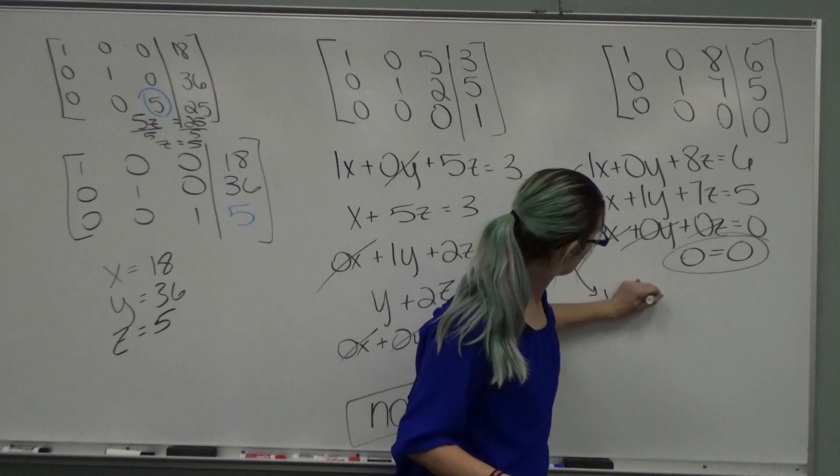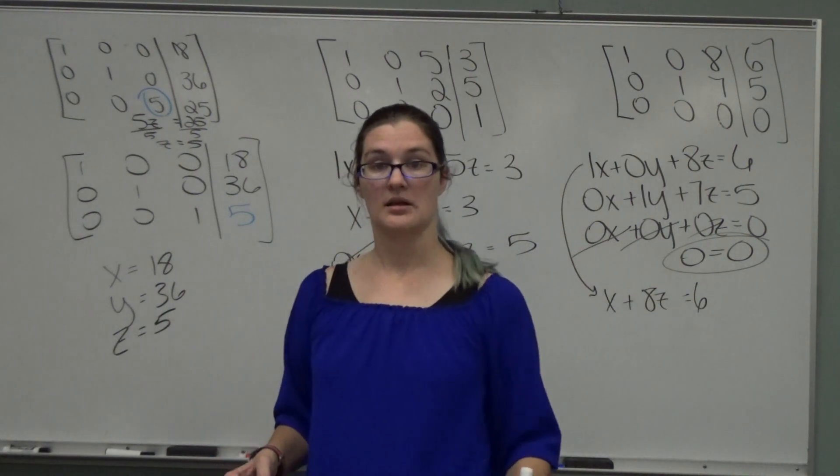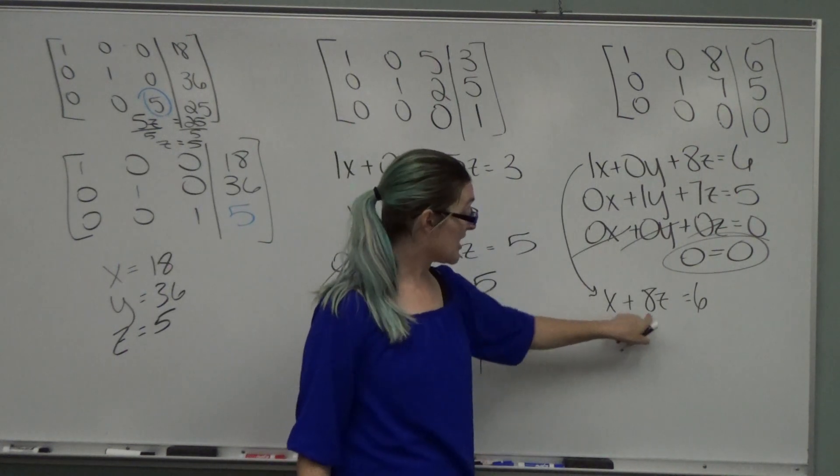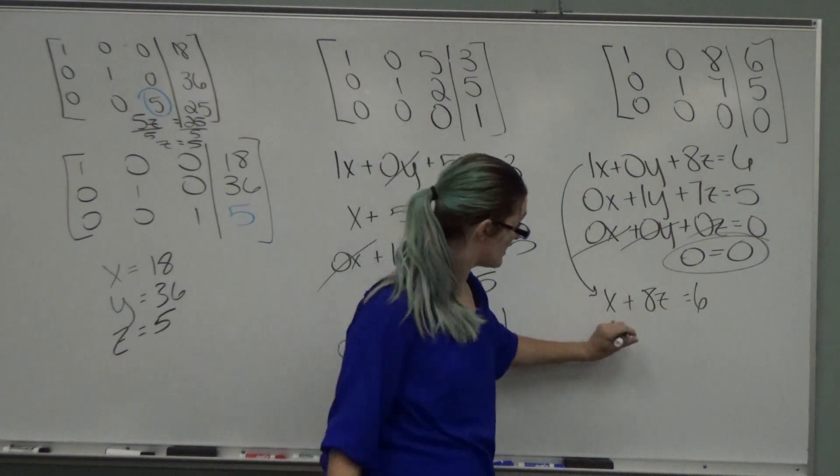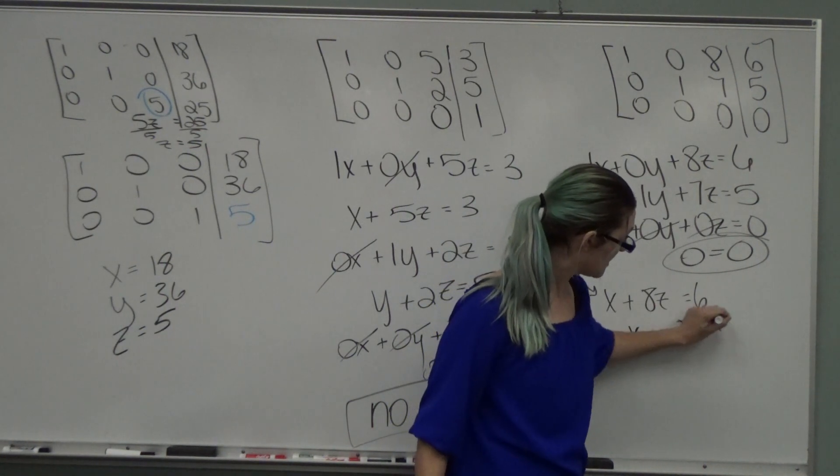That's x plus 8z equals 6. Your x had the leading 1. Solve for it. To solve for x, we'd subtract 8z. x equals negative 8z plus 6.